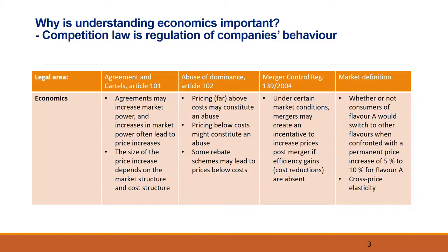Moving to Article 102, abuse of dominance. Under Article 102, we will often check price-based abuse — for example, prices are too high or too low and thus anti-competitive. Embedded in both is the need for a benchmark, often expressed in terms of costs and how competition would have evolved under normal competition.